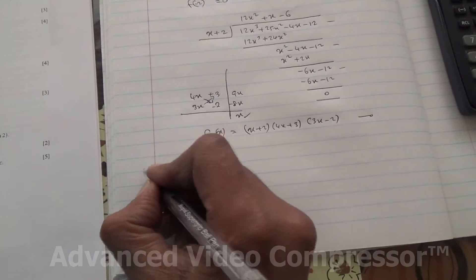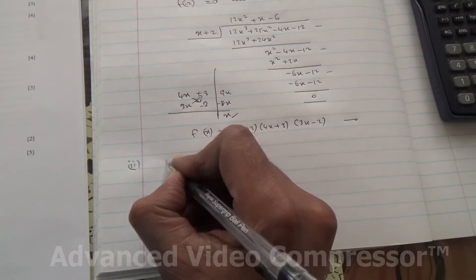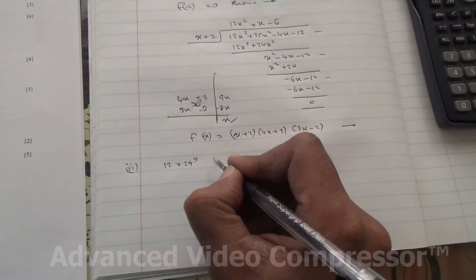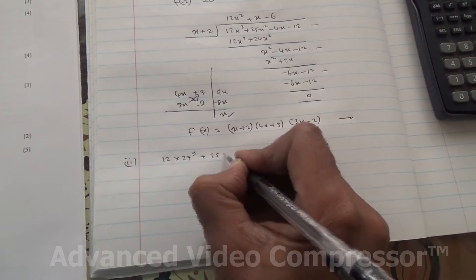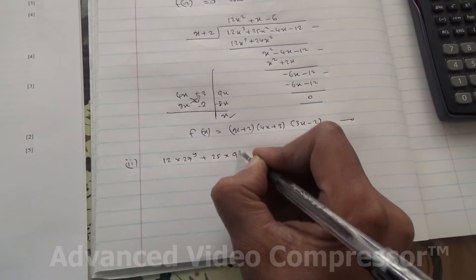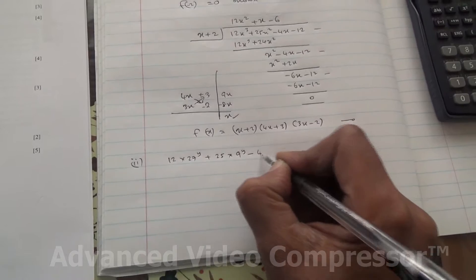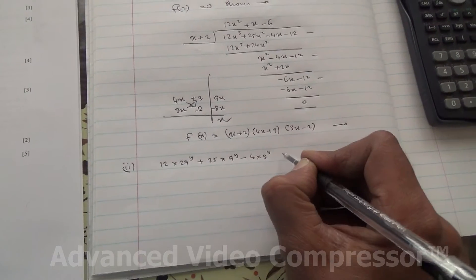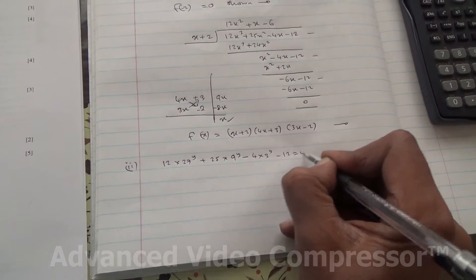OK, first of all, what do we have? It is 12 times 27 to the power of y plus 25 times 9 to the power of y minus 4 times 3 to the power of y minus 12 is equal to 0.